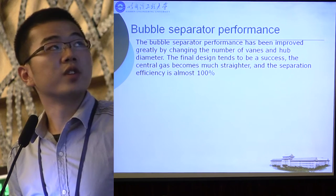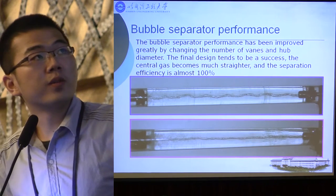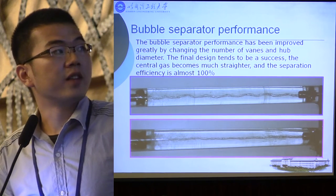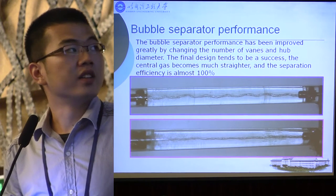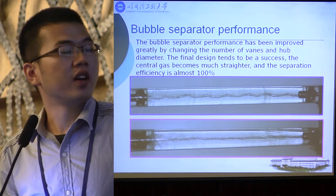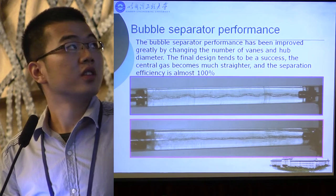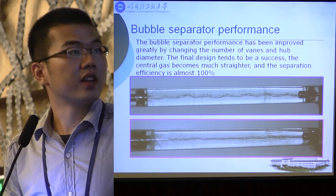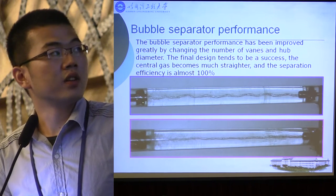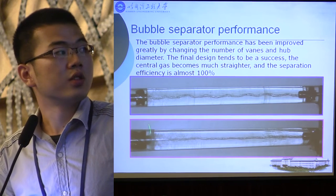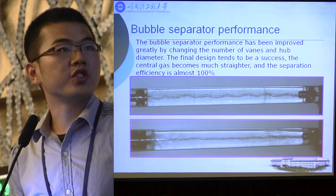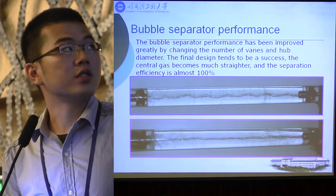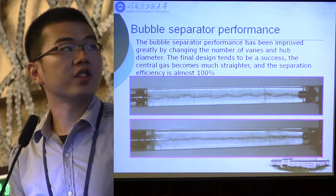The bubble separator performance has been improved greatly by changing several parameters: changing the number of vanes, increasing the hub diameter, and increasing the length of the vanes. We also decreased the outlet angle and increased the half-angle from 60 degrees to 40 degrees. This picture shows the earlier design; this is the final design. The final design is a success — the central gas core becomes much greater and the efficiency is almost 100%.